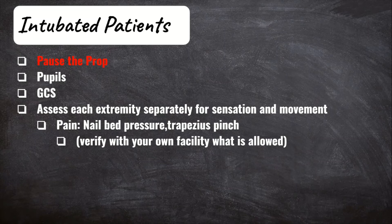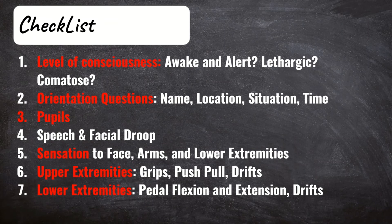You need to verify with your own facility what is acceptable as a noxious stimuli — whether nail bed pressure, a trapezius pinch, or whatever your facility finds acceptable. Here's a quick checklist for yourself when doing a neural assessment — pause the video if you want to look longer. We have level of consciousness, orientation questions, pupils, speech, sensation, and then assessing the upper and lower extremities for strength, looking for drifts, grips for the upper extremities, and pedal flexion and extension for the lower extremities.